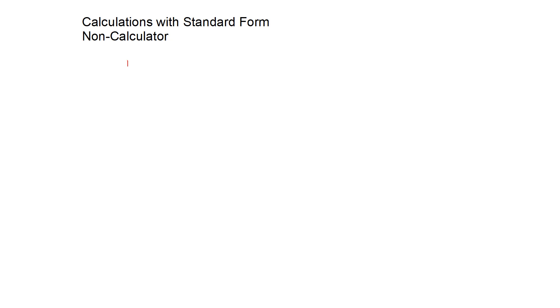In this video, we're going to learn how to do calculations in standard form without a calculator. To begin with, recall that if I have numbers with the same base and different powers and I multiply them, we add the powers. So 10 to the 3 multiplied by 10 to the 4 would be 10 to the power of 3 plus 4, which is 10 to the 7.